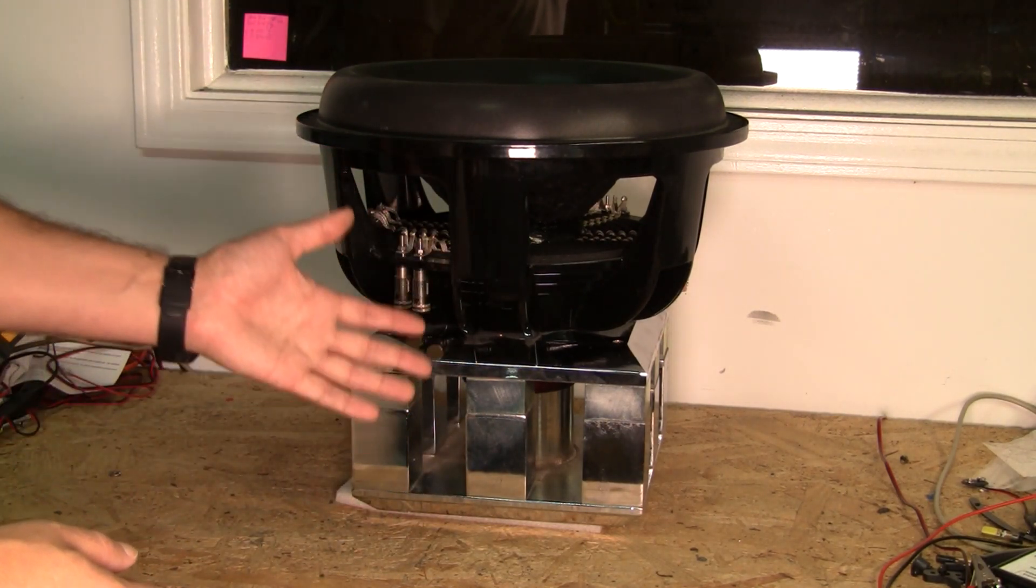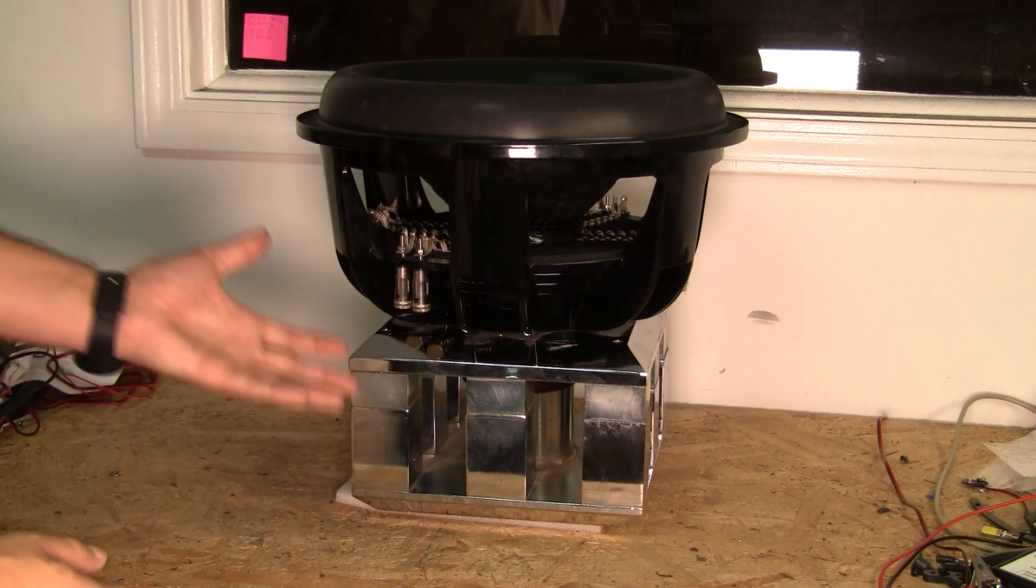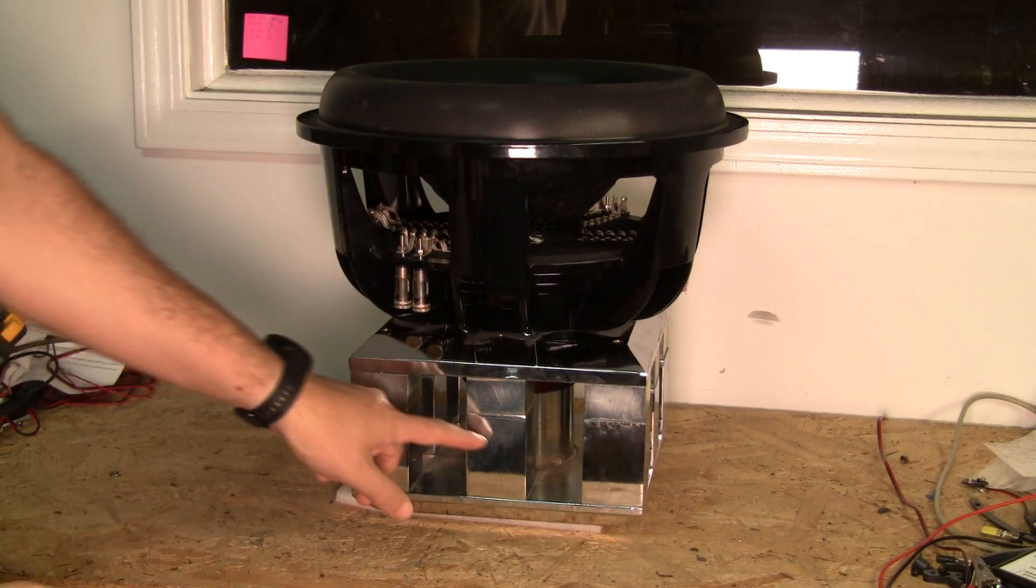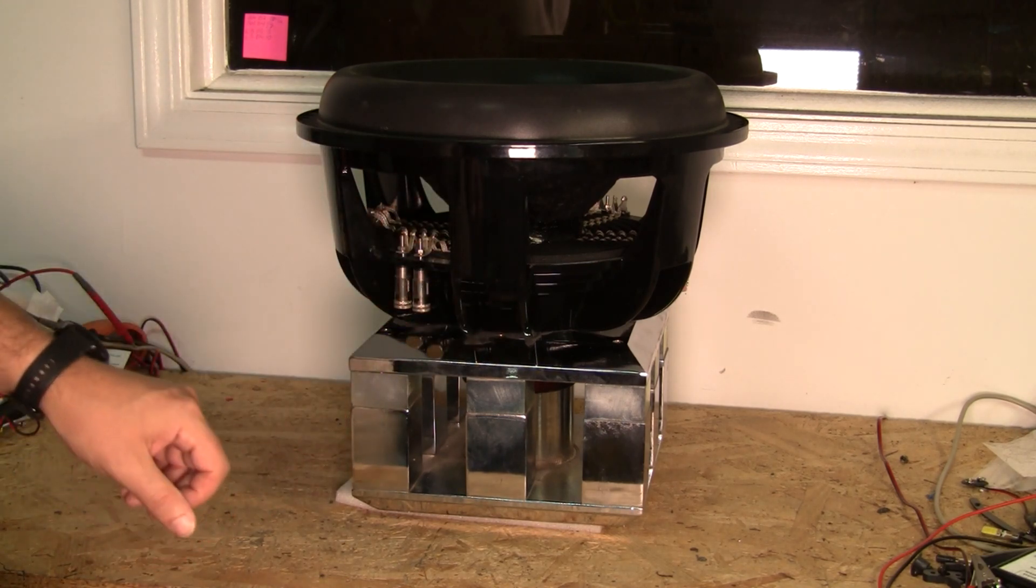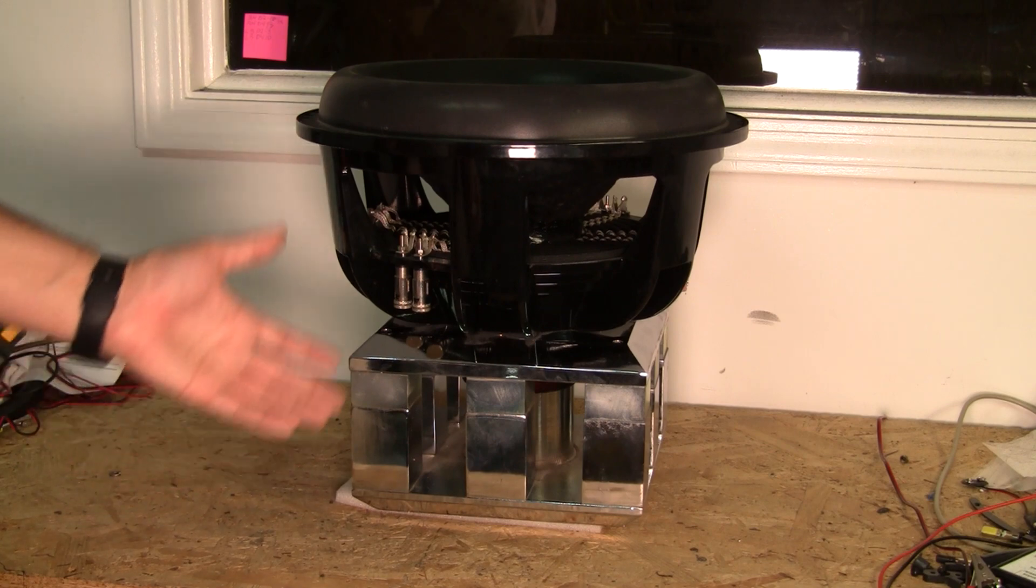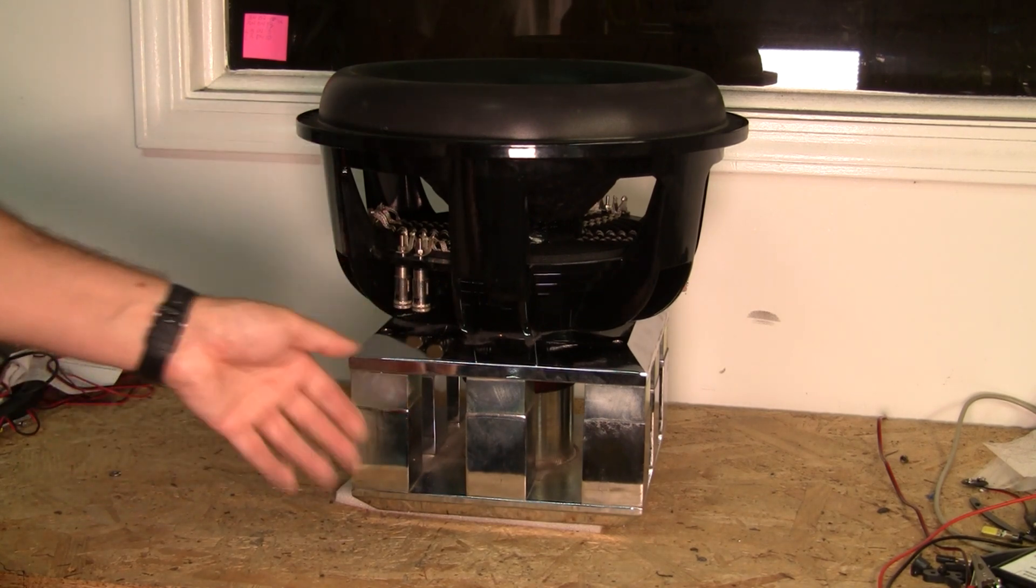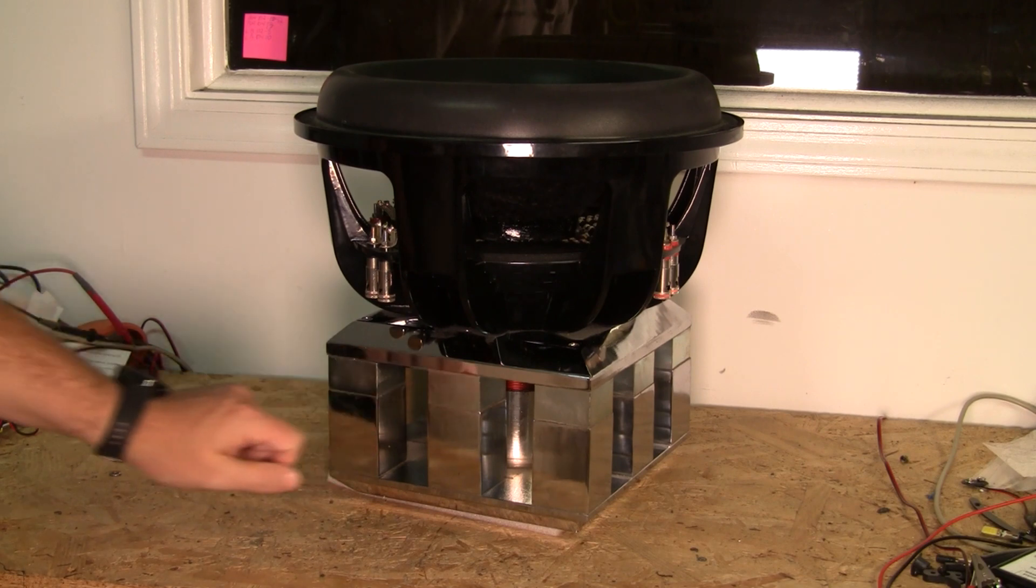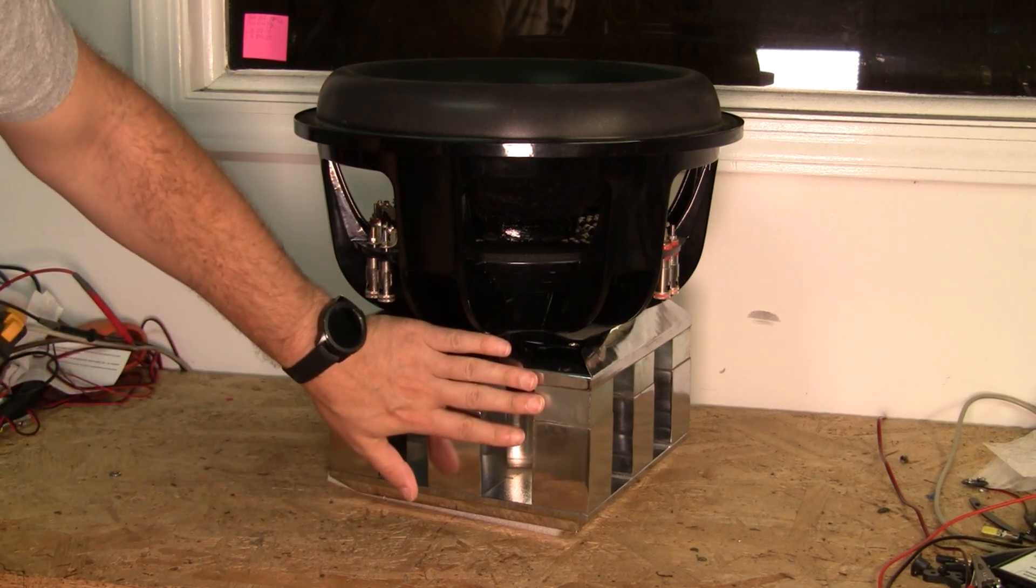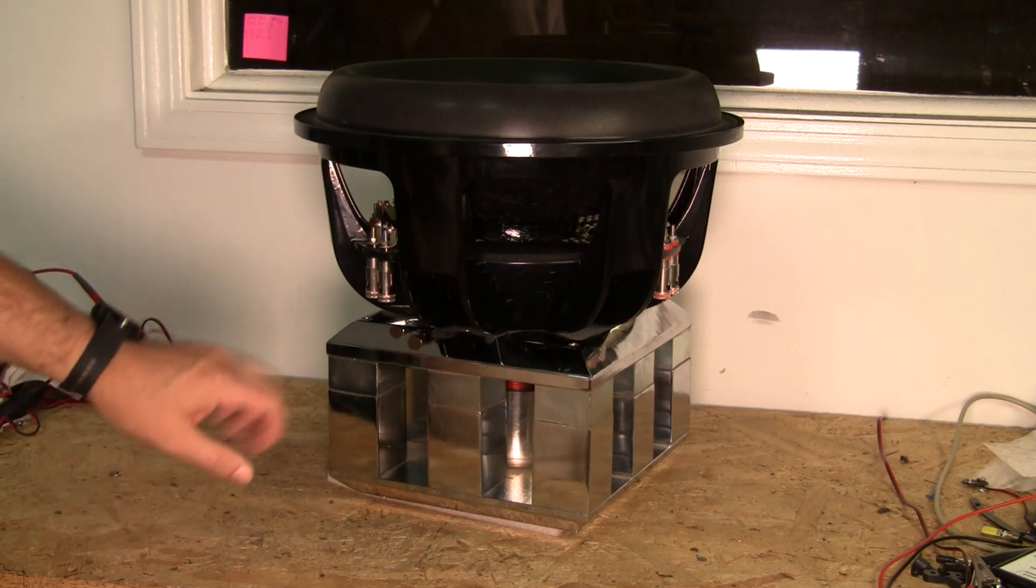We're going to start with the Ermagerd V2. This is one of our subs. This one happens to be a prototype, so it doesn't have logos on it. But otherwise, from what you can see, this is physically the same as what a production unit was.